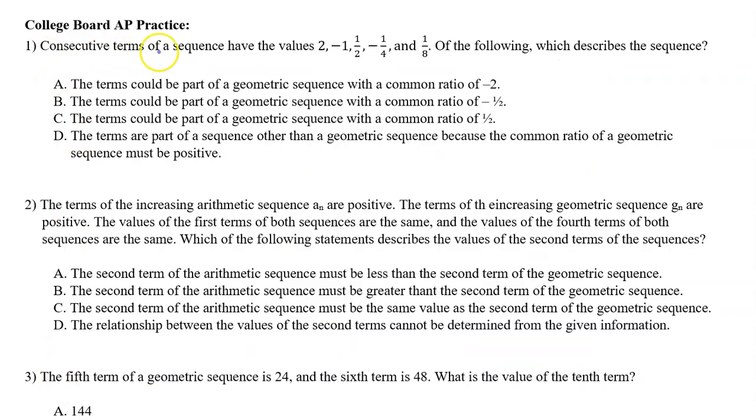Number 1. Consecutive terms of a sequence have the values 2, negative 1, 1 half, negative 1 fourth, and 1 eighth. Of the following, which describes the sequence?